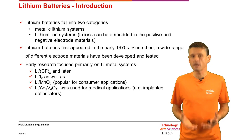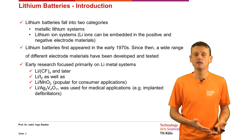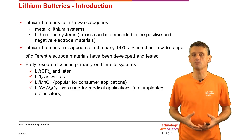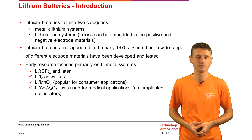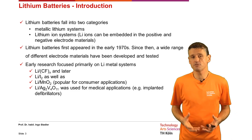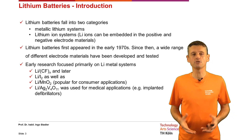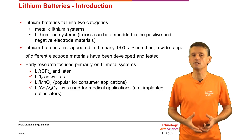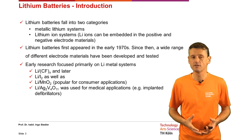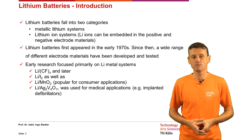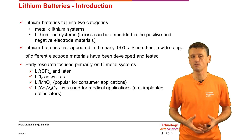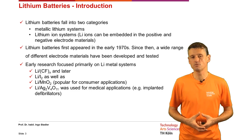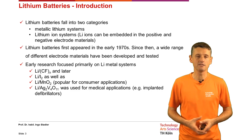Lithium batteries fall into two categories: metallic Lithium systems and the more well-known Lithium ion systems. Lithium ions can be embedded in the positive and negative electrode materials. Lithium batteries first appeared in the early 1970s, and since then a wide range of different electrode materials have been developed and tested. Early research focused primarily on Lithium metal systems — Lithium CF, then later Lithium I₂ — as well as Lithium with manganese for consumer applications, and Lithium silver vanadium used for medical applications such as implanted defibrillators.